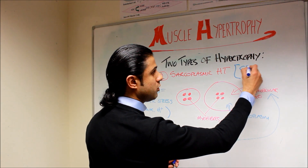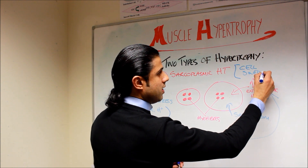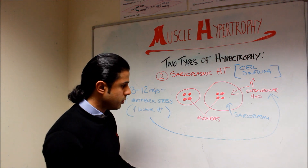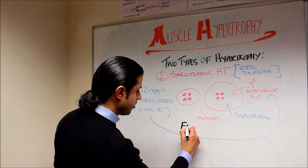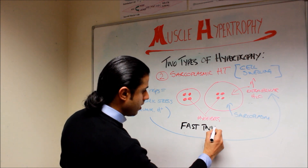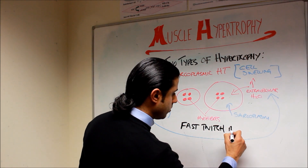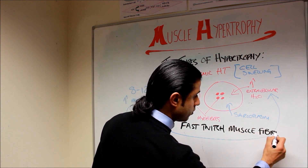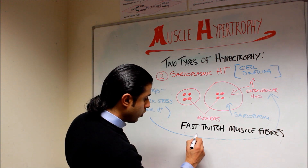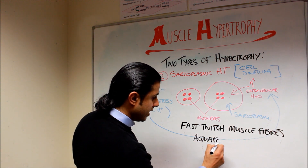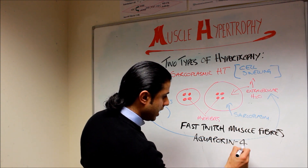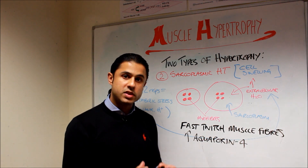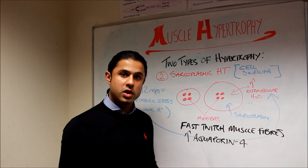Sarcoplasmic hypertrophy is also known as cell swelling. Certain muscle fibers — particularly fast twitch muscle fibers — have water channels called aquaporin 4, and fast twitch muscle fibers have an increased amount of aquaporin 4, which facilitates the movement of extracellular water into the sarcoplasm.